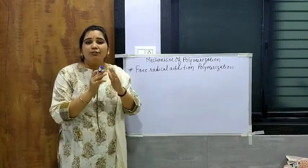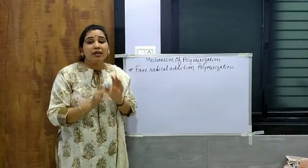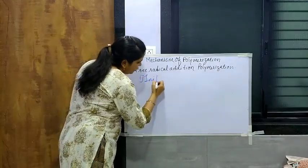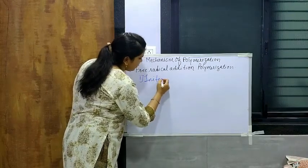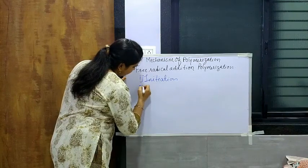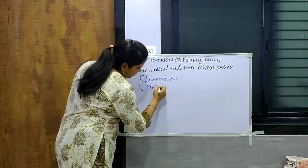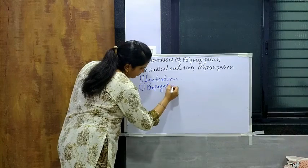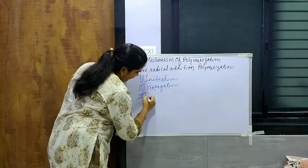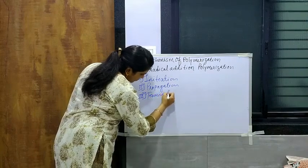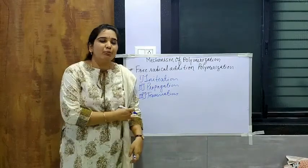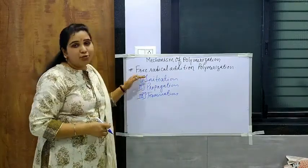Whenever we go through this mechanism, there are mainly three steps. Number one: initiation — where we initiate the reaction. Number two: propagation. And number three, a very important step: termination. These are the three main steps to carry out free radical addition polymerization. Now we will see the first step — initiation.